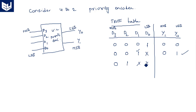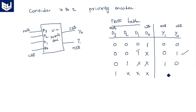That means whatever may be the combination of the lower bits, as the highest priority bit D2 is activated, the output is 1, 0 — the binary representation of 2. Similarly, when D3 is the highest priority bit that is activated, the output is 1, 1.